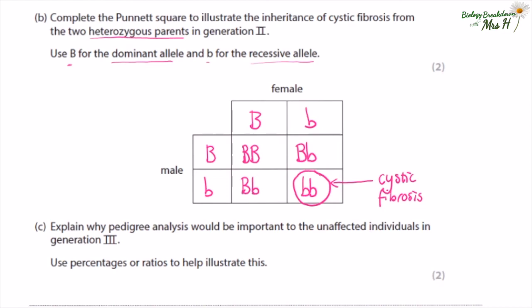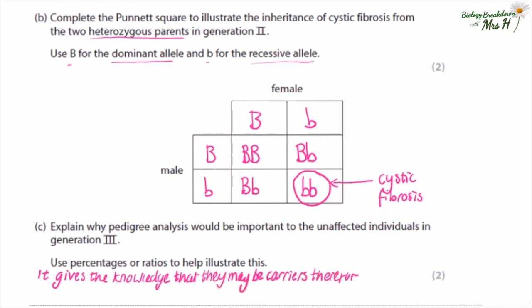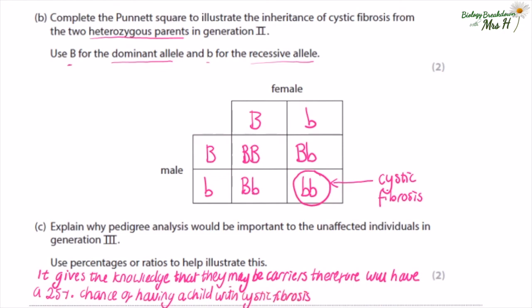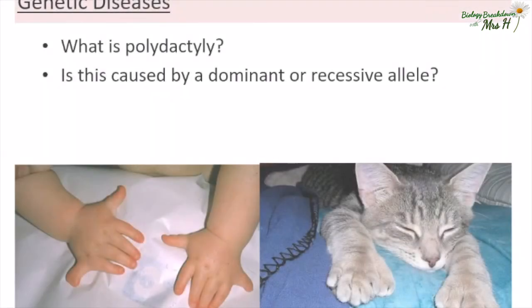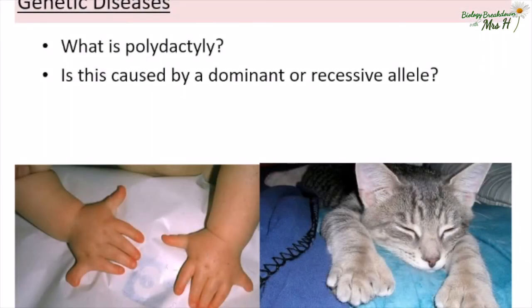Explain why the pedigree analysis would be important to the unaffected individuals in generation three. It gives them the knowledge that they might be carriers, and therefore they will have a 25% chance of having a child with cystic fibrosis if they have a child with another carrier.